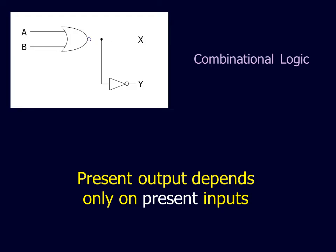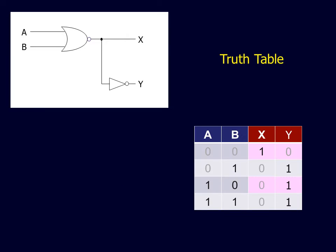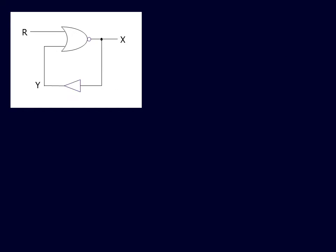In combinational logic, the present output depends only on the present state of inputs. For combinational logic, we used truth tables, which relate the output state to each possible input state. We now study circuits in which the present output state does not only depend on present inputs.